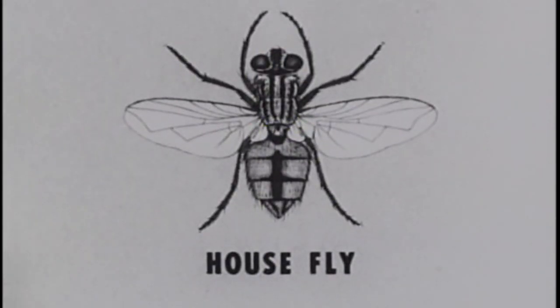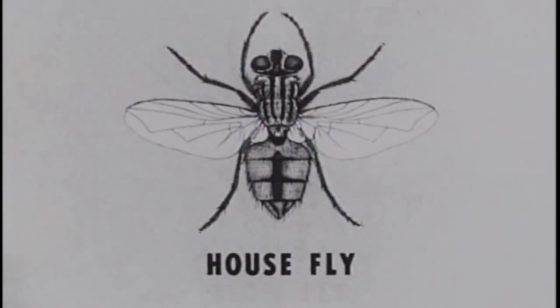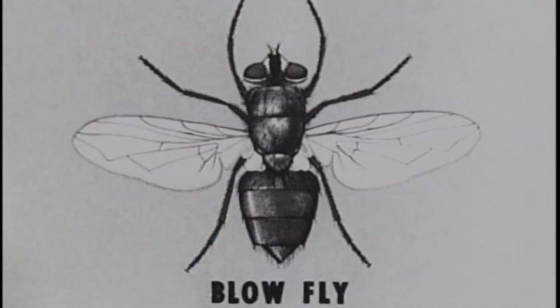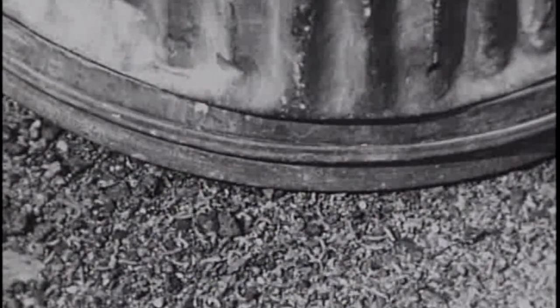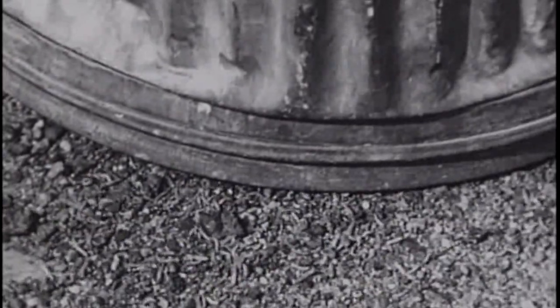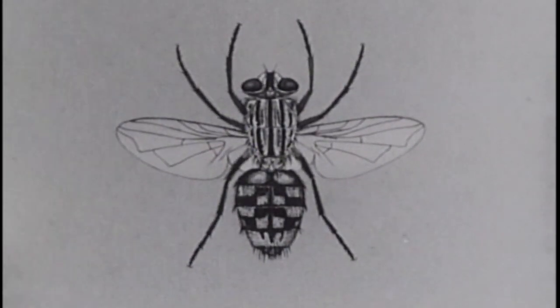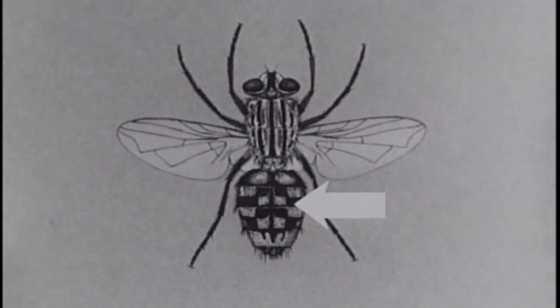When we talk about domestic flies, we should include several relatives of the housefly. First, there are the blowflies, generally larger than the housefly and usually shining metallic blue or green. When blowfly larvae attain full growth, they leave the breeding medium and may crawl for several yards before burrowing into the soil to pupate. Another domestic fly is the flesh fly, typically with a checkerboard pattern on the upper side of the abdomen.